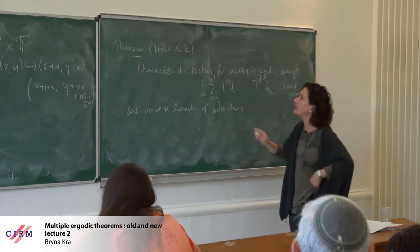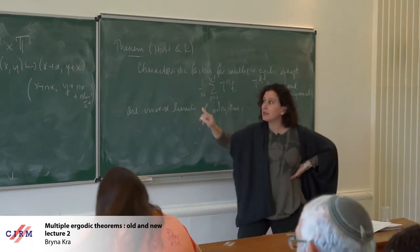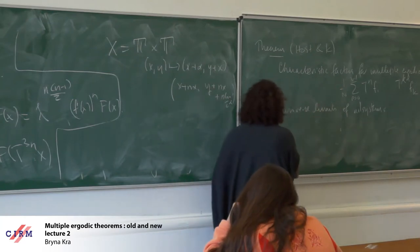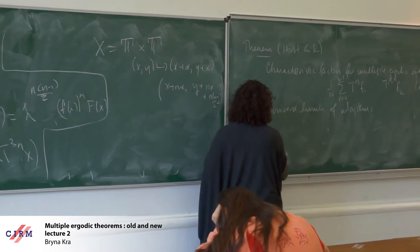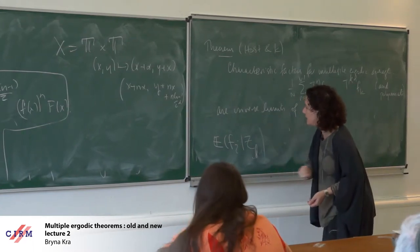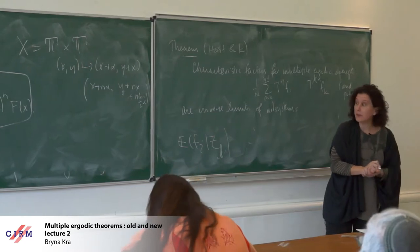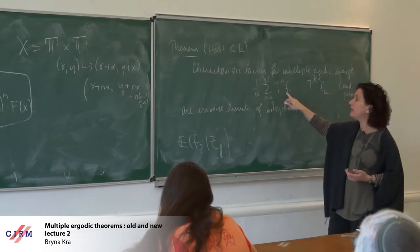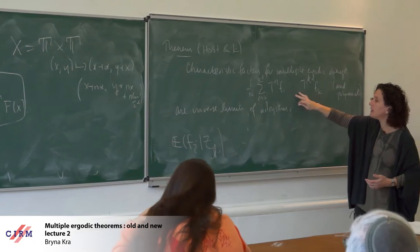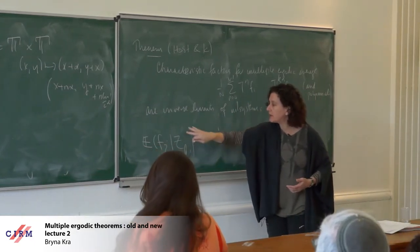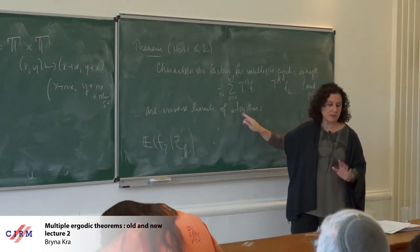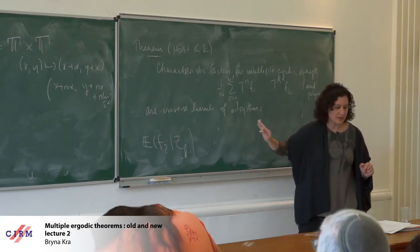Let me make sure we understand what all these words are. Characteristic factors means exactly that I can take this average and replace each function f_i by its conditional expectation down on some factor, which I'll call Z_{k-1}. Each one of these replacements happens in L2, in the same sense as in Furstenberg's theorem. So in order to understand this limit, it suffices to replace each function by its conditional expectation on some factor, called the characteristic factor, and this factor has the structure of an inverse limit of nil systems.